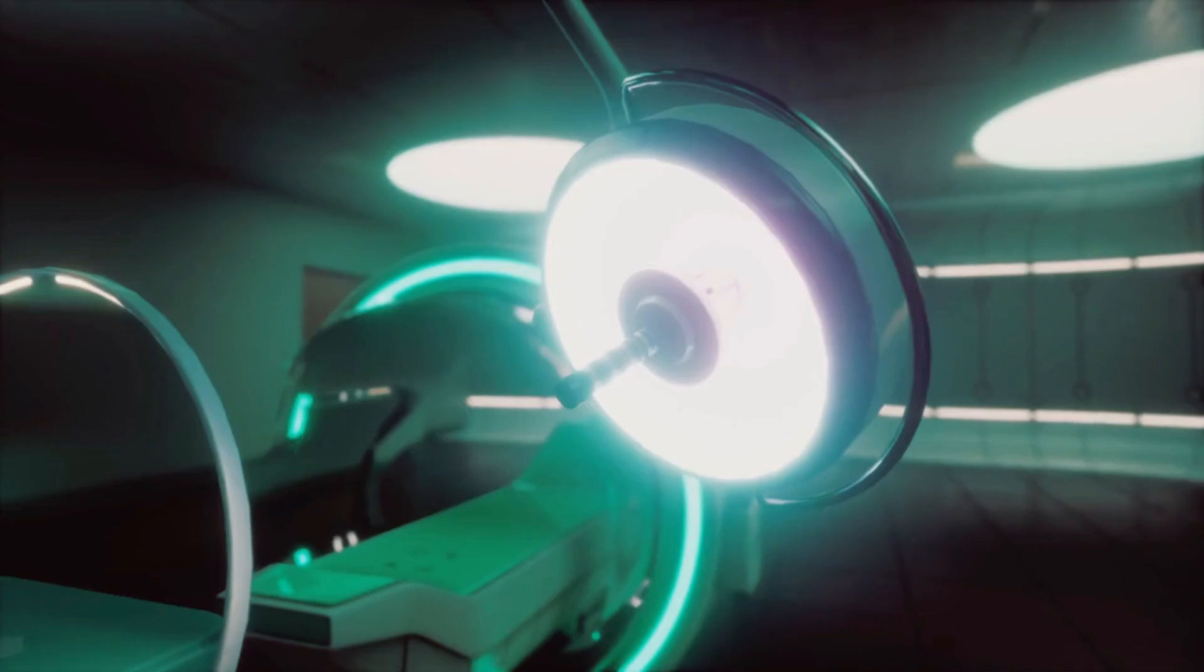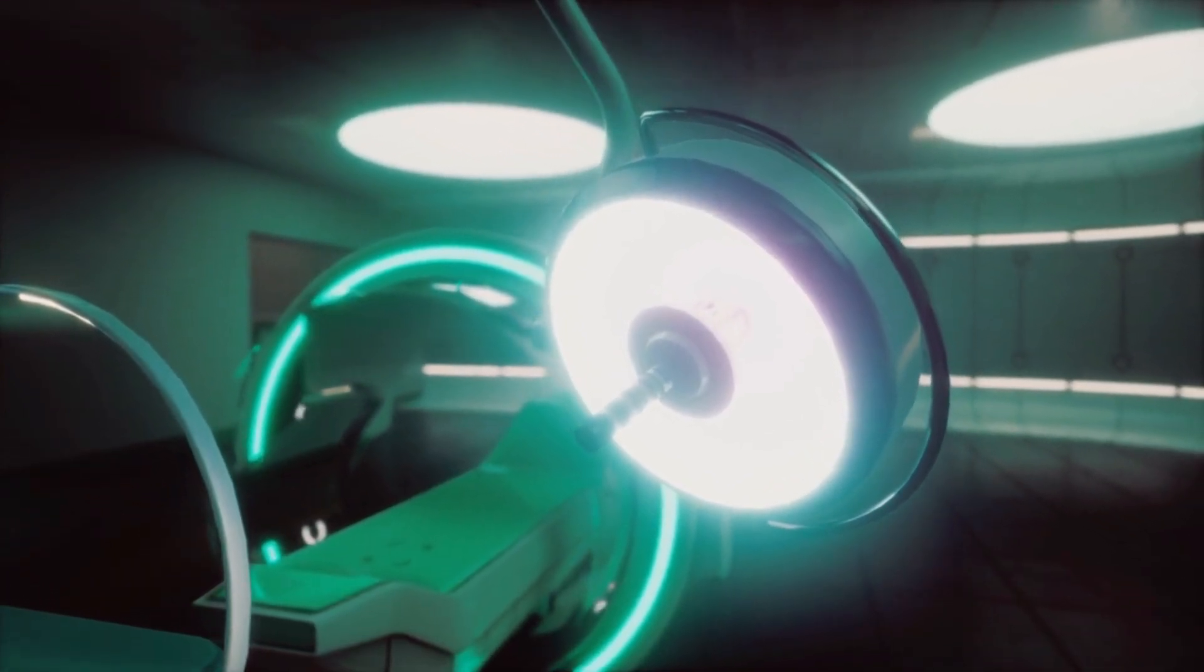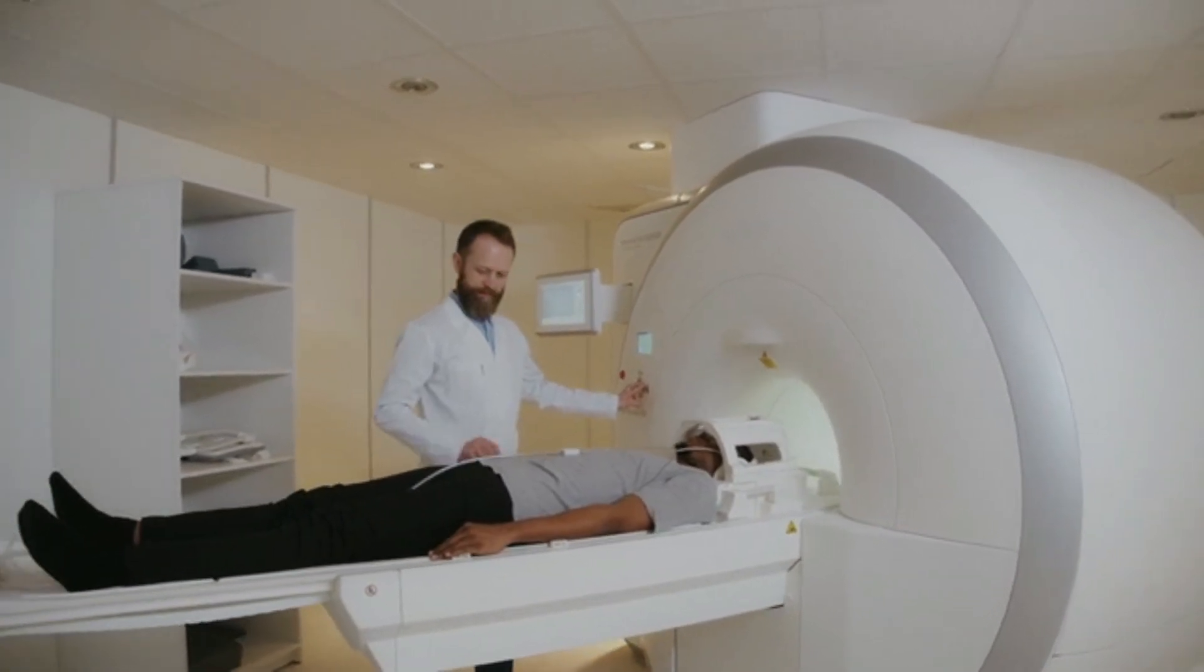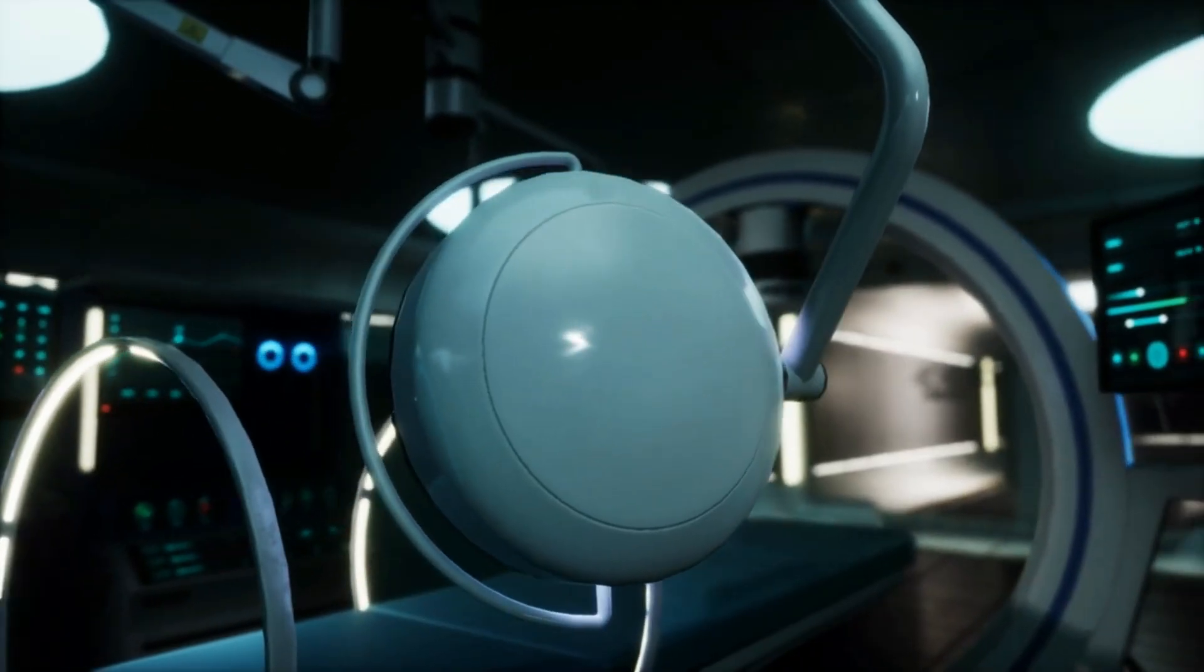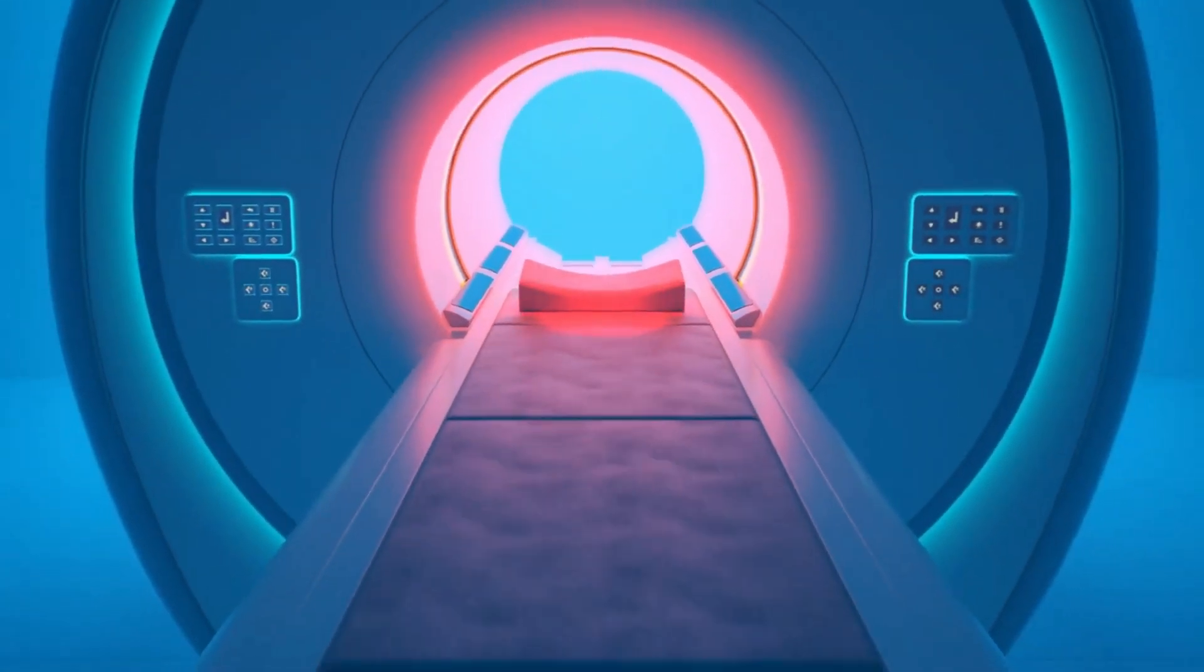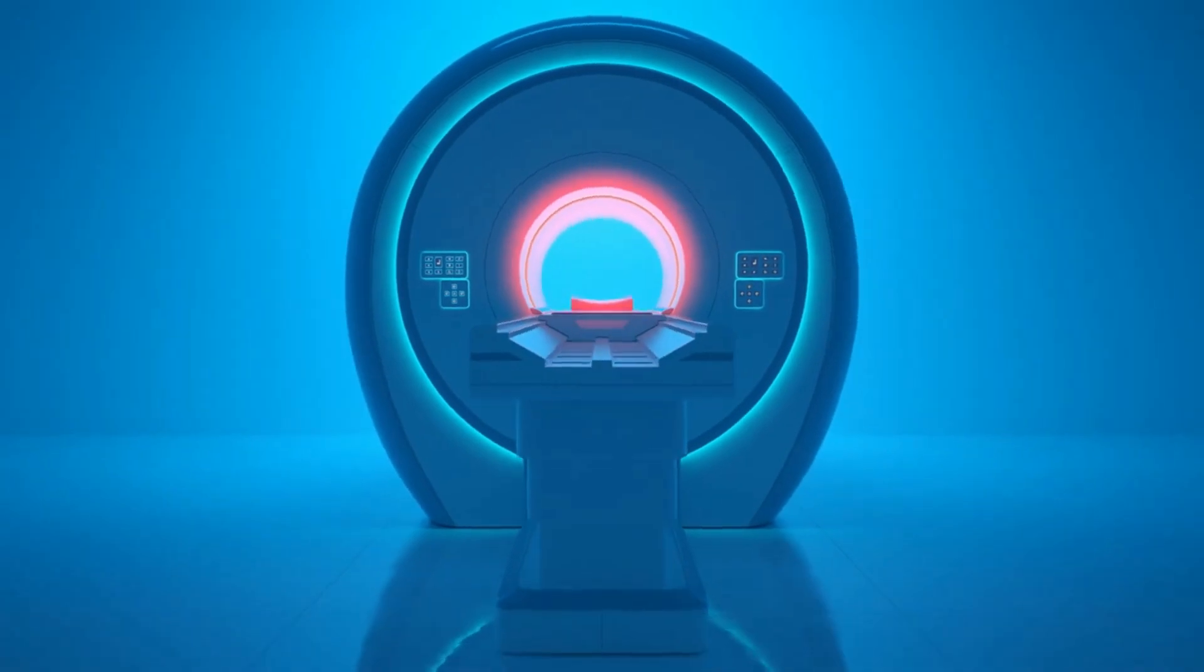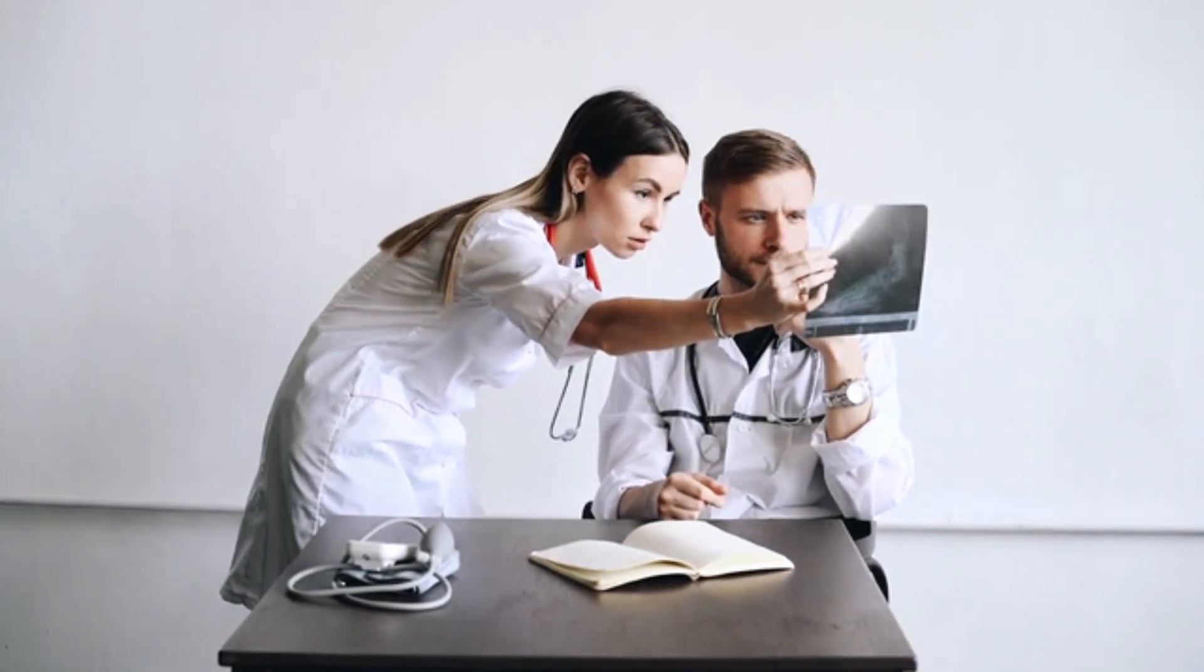Rhenium-188, a radioactive isotope of rhenium, is used in nuclear medicine for diagnostic imaging and cancer therapy. It emits beta radiation, which can penetrate tissues and is used in treatments like radiotherapy for certain types of cancer. Rhenium-188 is also used in diagnostic procedures, such as bone scans and tumor imaging, contributing to the early detection and treatment of medical conditions.